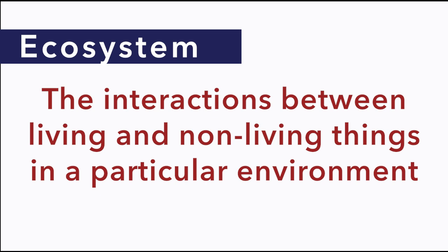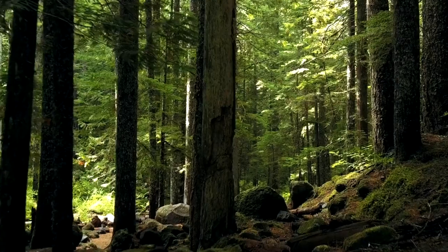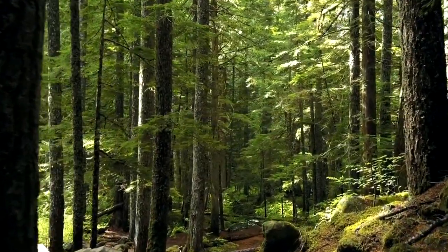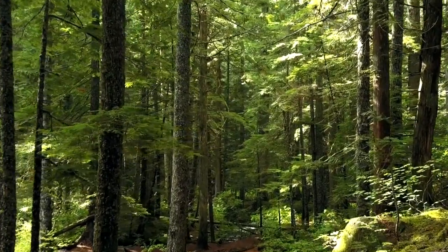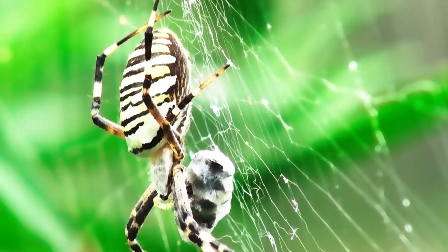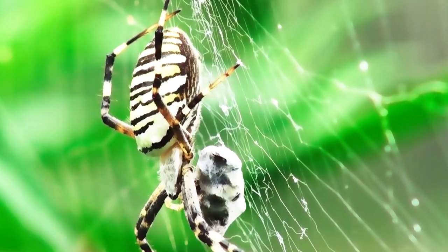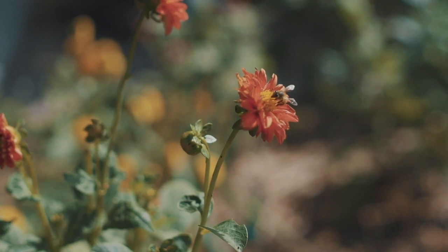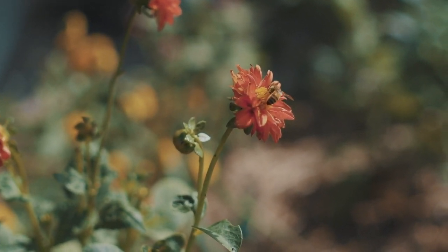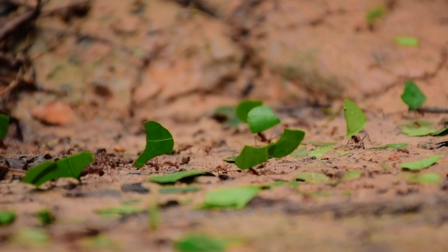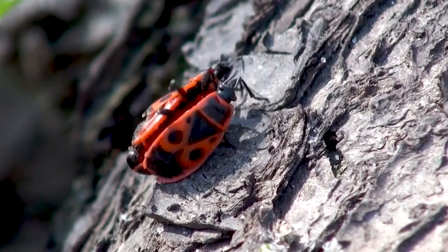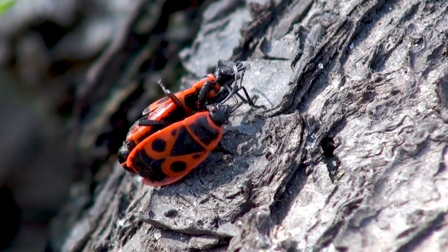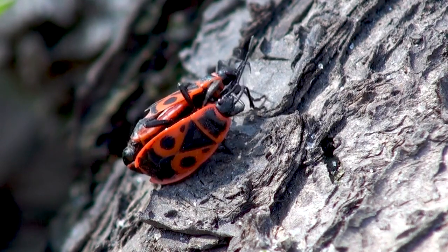The ecosystem of a rotting log is formed by the interactions between the organisms living in and on the log, and the soil, temperature, and other non-living features around the log as well. A forest is also an ecosystem. All of the living things such as trees and animals, and all of the non-living things such as the sunlight and the air, are interacting. Understanding how ecosystems function is all about understanding connections. All parts of an organism's world are connected. If one part is affected — climate, availability of water or food or habitat — the organism will need to adjust somehow. Some organisms adjust well and others do not.